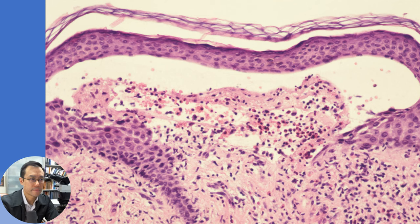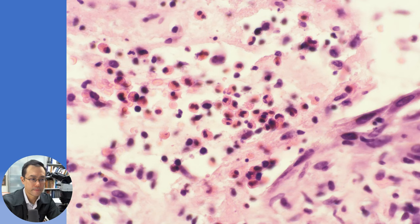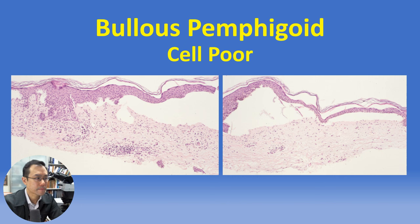Here is a subepidermal blister with many inflammatory cells — mostly eosinophils — within it, and here is a relatively cell-poor example.